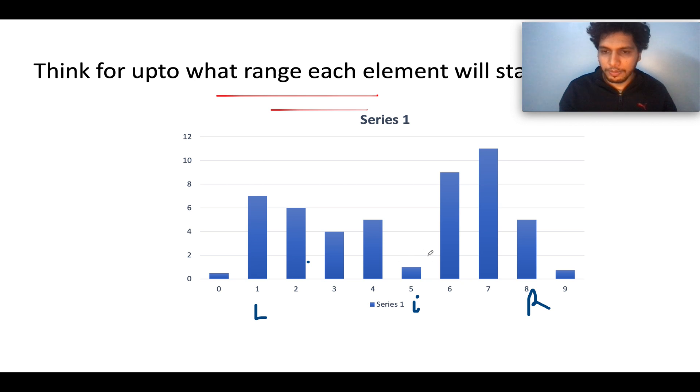Think for up till what range each element will act as the minimum. Hypothetically assume that the current element under consideration is this one. We need to identify up till what range towards the left or towards the right this element is acting as the minimum one. Let's apply the same concept of stacks from largest area of histogram. It is acting as the minimum one up till the first index, and we know this element will act as the minimum for this entire range.